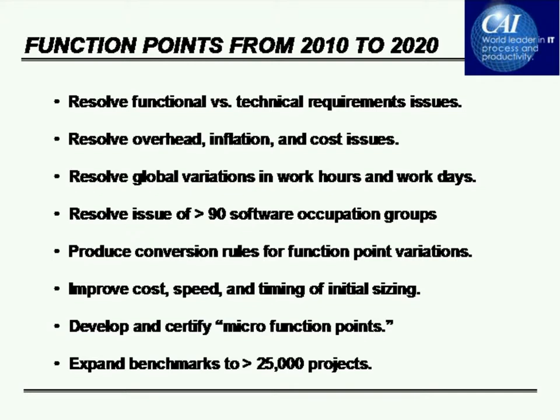We also need to deal with conversion rules between function points as used in the US — which are IFPUG, International Function Point User Group function points — and those used elsewhere. For example, Finland has its own Finnish function points, there's another variant in the Netherlands, and there are also COSMIC function points, so we need to convert back and forth. We also need to improve the cost, speed, and timing of function point counting, because one of the barriers to adopting this metric is that it's fairly slow and fairly expensive to count.